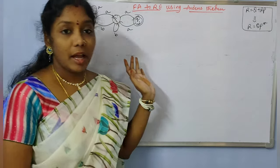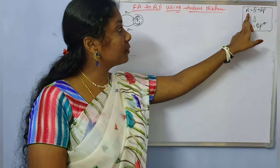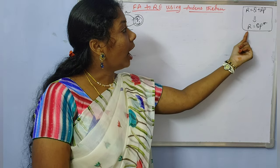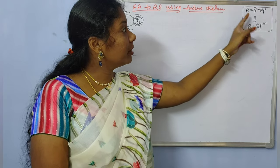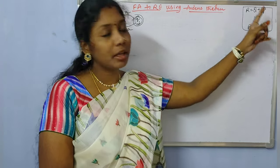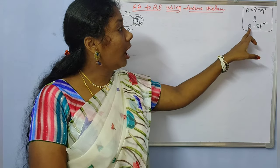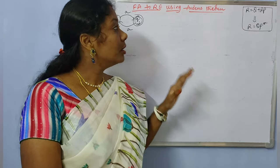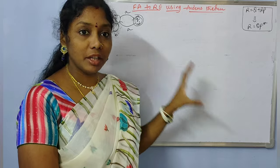First of all, what is meant by Arden's theorem? If the equation is in the form R = Q + RP, then R = QP* is the unique solution. So you have to use the equation in this format: R = Q + RP, and the solution is R = QP*.